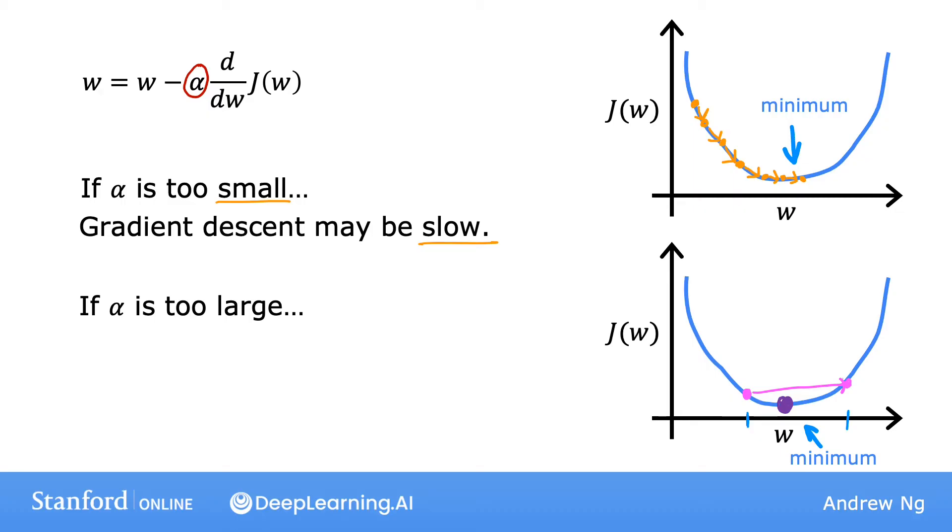So you move from this point on the left all the way to this point on the right. And now the cost has actually gotten worse. It has increased because it started out at this value here. And after one step, it actually increased to this value here. Now, the derivative at this new point says to decrease w. But when the learning rate is too big, then you may take a huge step going from here all the way out here. And again, if the learning rate is too big, then you take another huge step with acceleration and way overshoot the minimum again. And one more time, you do another update and end up all the way here.